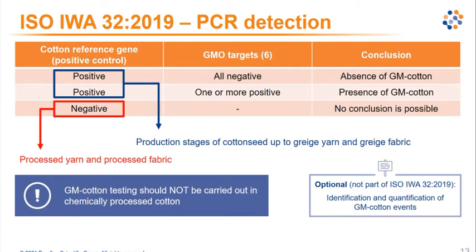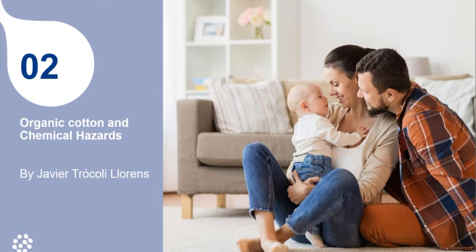The identification and quantification of GM cotton varieties present in a sample is not part of the ISO IWA32 protocol. This is an optional analysis we can offer at our lab, providing additional information about the level of GM cotton contamination and which GM cotton varieties are present — which may help investigate the reasons for the contamination. My part is now over and I hand over to Javier.